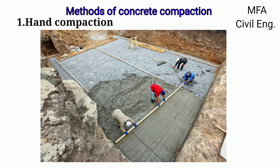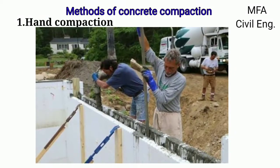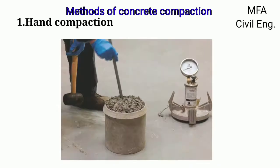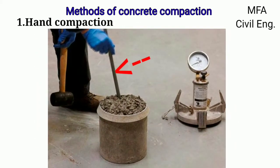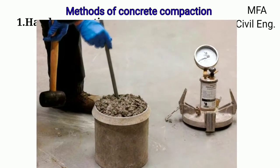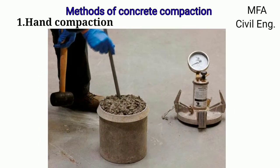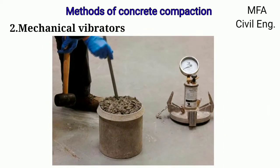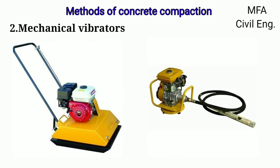Hand compaction method is suitable for a small volume of concrete and for narrow column and congested sections. In this method, a tamping rod — which is a steel rod of 10 to 16 mm diameter with a bullet nose — is used to compact the concrete by repeatedly tapping it into the concrete. The tamping should be done fast enough. Hand tamping or rodding is slowly going out of practice, and nowadays all compaction is done by mechanical vibrators.